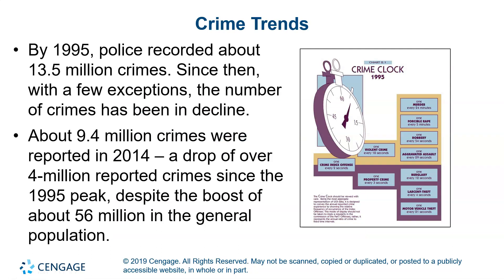By 1995, police recorded about 13.5 million crimes. Since then, with few exceptions, the number of crimes has been in decline. The last couple of years, while overall crime has gone down over several decades, in certain cities some violent crime has seen an uptick. About 9.4 million crimes were reported in 2014, a drop of over 4 million reported crimes since the 1995 peak, despite a boost of about 56 million in the general population — so population is going up and crimes are still going down.